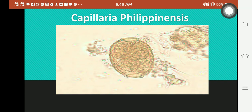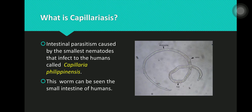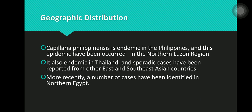Good day everyone. Today we will talk about Capillaria philippinensis. Capillariasis is the intestinal parasitism caused by the smallest nematodes that infect humans, called Capillaria philippinensis. This worm can be seen in the small intestine of humans.